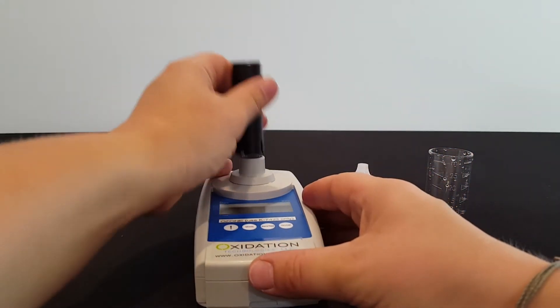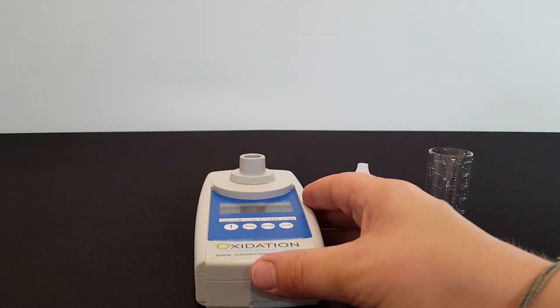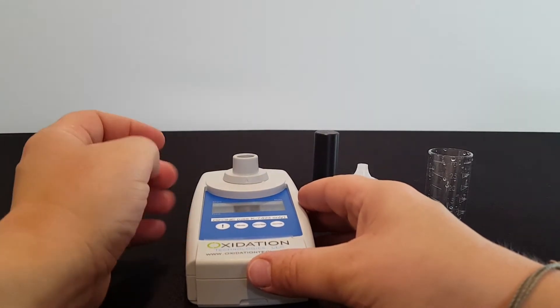It is now ready to be used for the dissolved ozone test. So I'm going to remove the zeroing ampoule and set that aside. I'm going to keep the light shield out.